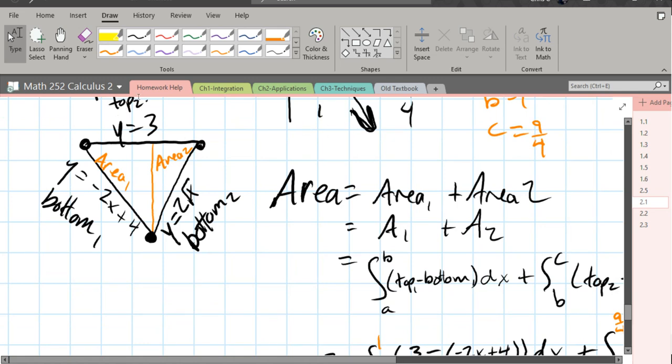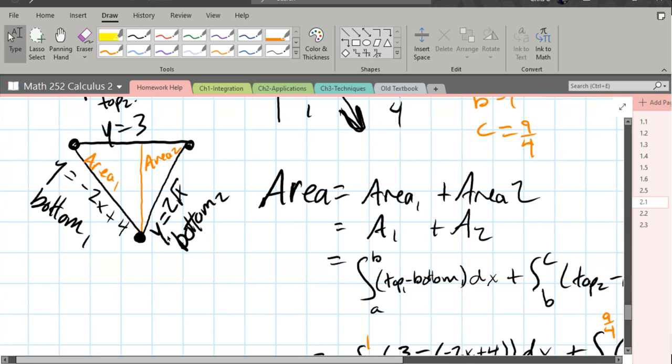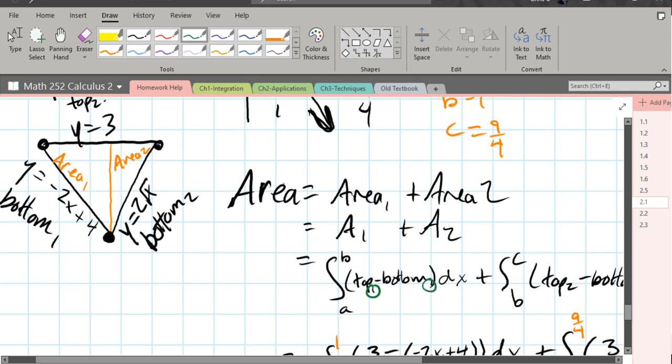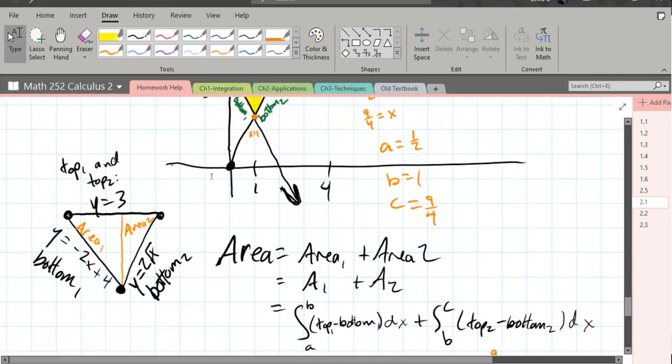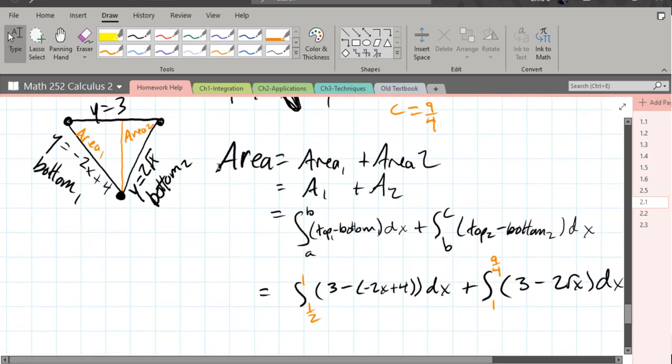You can see those in orange over here, a1 plus a2. So our first integral is top 1 minus bottom 1 dx from a to b. Our second area is top 2 minus bottom 2 dx. Now, this value is the same here. Split it at x equals 1. And I just plugged in all my endpoints here and my top and bottom 1, top and bottom 2, and then you're ready to integrate.